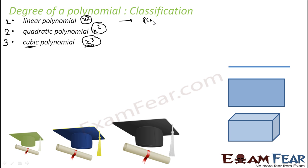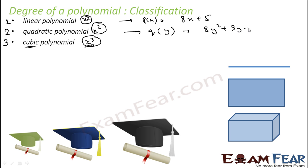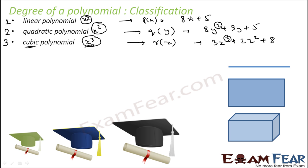Example of a linear polynomial: p(x) = 8x + 5, maximum power is 1. For quadratic, let's say 8y squared + 9y + 5, maximum power is 2. For cubic, 3z cubed + 2z squared + 8, maximum power is 3. So here maximum power is 2, here maximum power is 1.